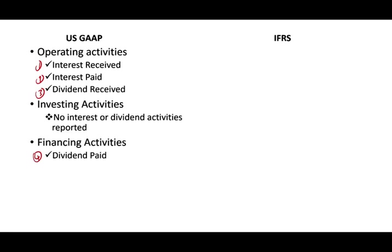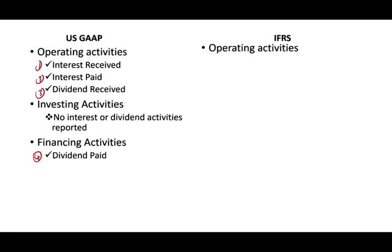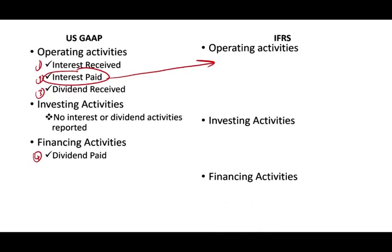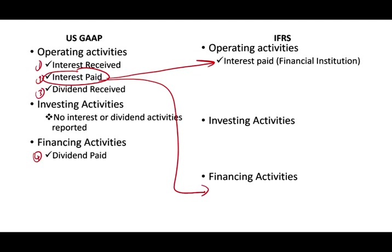Under IFRS, let's start with Interest Paid. Interest Paid could be under Operating Activities or under Financing Activities. Interest Paid could be Operating if the company is a financial institution — meaning they lend money, earn interest, and pay interest on deposits, so interest is part of their Operating Activities. Or, if it's not a financial institution, it's the cost of raising capital and therefore a financing activity. Under U.S. GAAP, Interest Paid is always operating. Under IFRS, it could be operating for a financial institution, or it could be a financing activity.